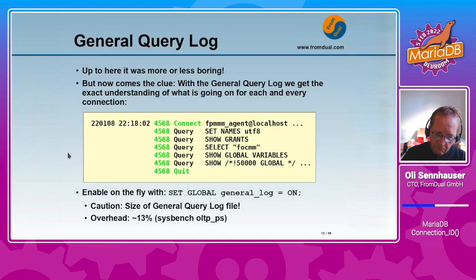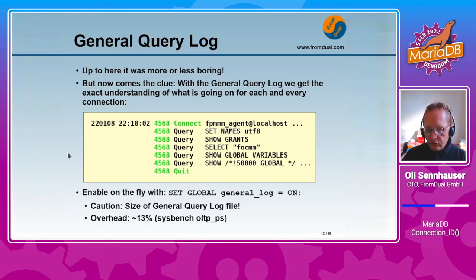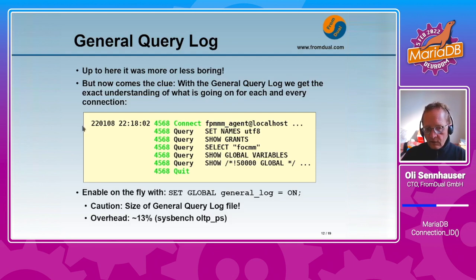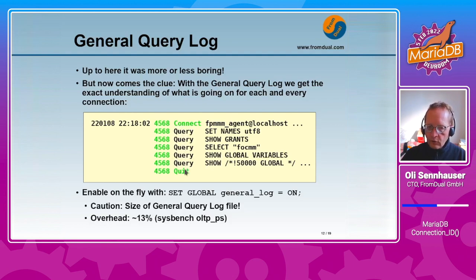And now comes the most interesting part. Up to here it was more or less boring technical information, and now we glue together the whole puzzle. The general query log is the key point here. With the general query log we get an exact understanding of what is going on for each and every connection. If enabled, the general query log shows at what time a given connection ID connected, and then what this connection did in its whole lifespan.